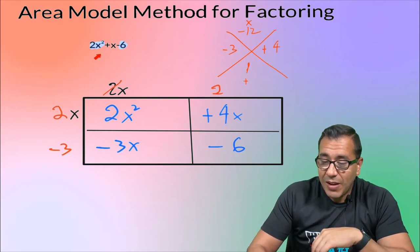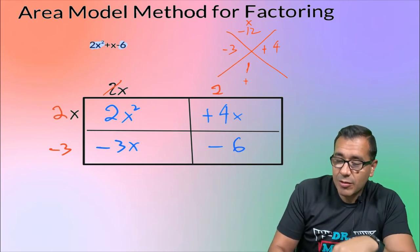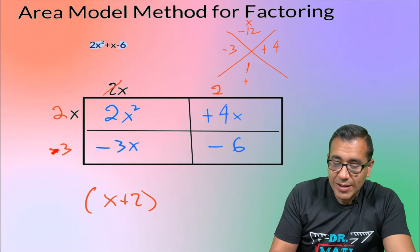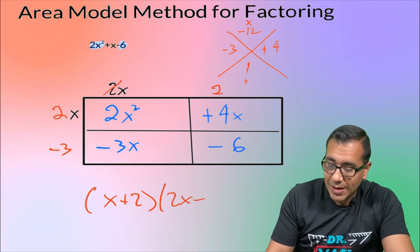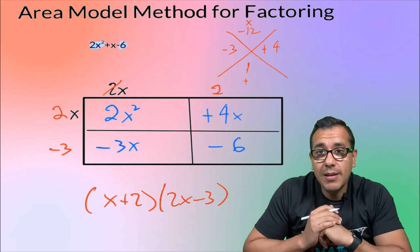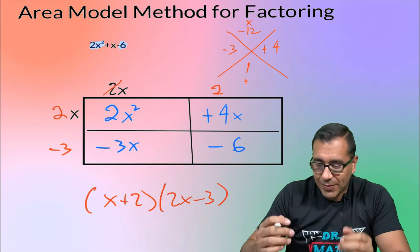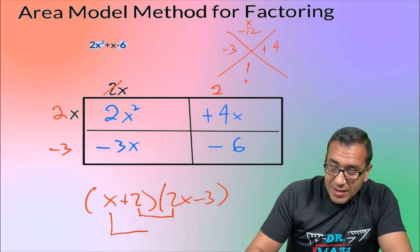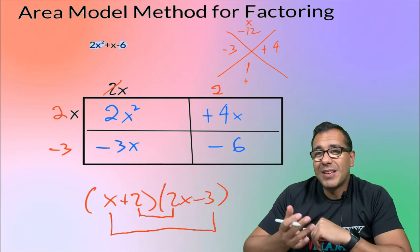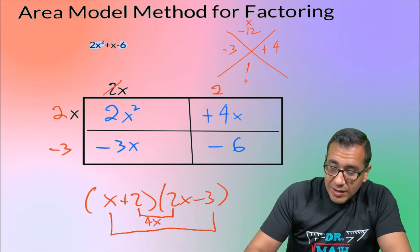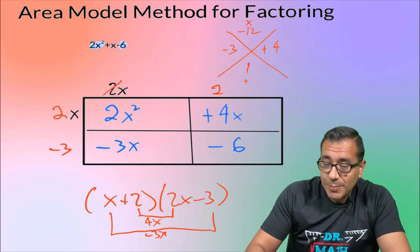Now if we want to factor this, here are our factors: X plus two, and two X minus three. Here's some bonus footage — a fast method to check. You multiply the inner terms, you get four X; multiply the outer terms, you get negative three X. Four X and negative three X gives me the X in the middle. So that's just extra confirmation — it's a really fast way of checking binomial times binomial.